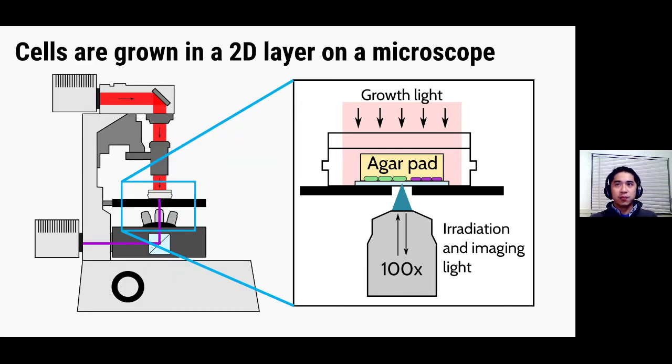This imaging dish is then placed onto the microscope and I'd like to point out here that our microscope has two different sources of light. The top lamp here creates a wide but less intense beam that we use to grow the cyanobacteria.